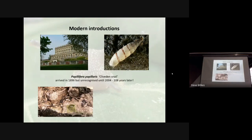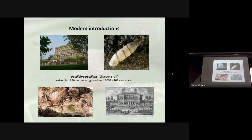There are modern introductions we've investigated. One is a lovely little snail with these beautiful little beads around the whorl, first recognised in 2004 living on the balustrade at Cliveden near Slough. The balustrade was brought over from the Villa Borghese in Rome in 1896, so that species survived there for 108 years before anybody recognised its existence. It must have been observed, but perhaps nobody was interested. The only other site where this is now known is on Brownsea Island, which also has a lot of Roman remains.